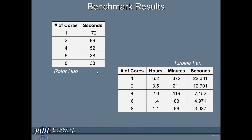When we look at the results, you can see that with the rotor hub model of 560,000 elements, with 1 core it took about 172 seconds, and with 8 cores it took about 33 seconds to mesh. For the turbine fan, the benefit is really more apparent. With 1 core, the turbine fan took 6.2 hours to mesh, whereas with 8 cores that dropped down to 1.1 hours — a pretty significant drop.